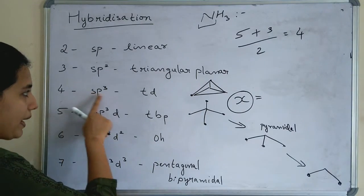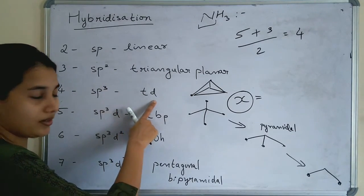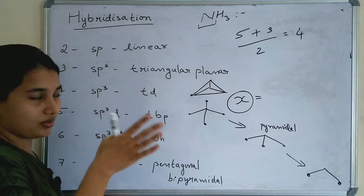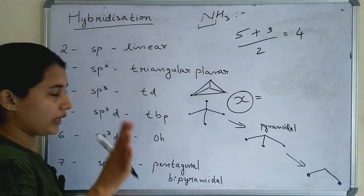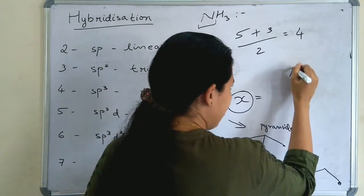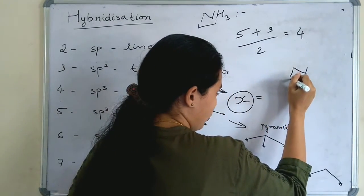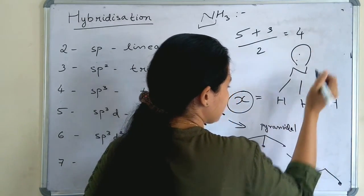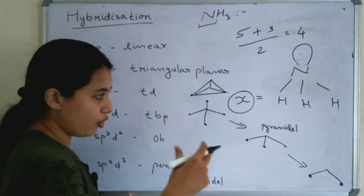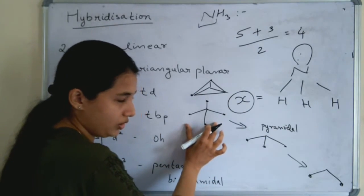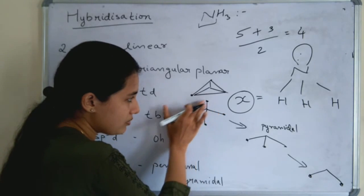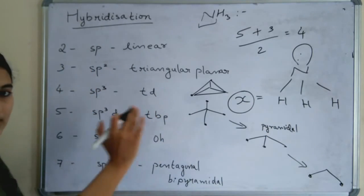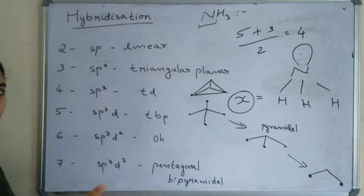Since x = 4, the hybridization is sp3, and the parent structure is tetrahedral. The original or parent structure of NH3 is tetrahedral. But the actual structure is pyramidal, because there is one lone pair on nitrogen. So first the tetrahedral parent structure is formed, and when one of the ligands is replaced by a lone pair, the shape becomes pyramidal. Knowing the parent structure makes it easy to identify the shape of any molecule.